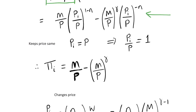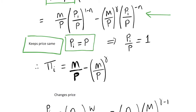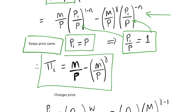Let's first look at profits when a firm keeps its price the same. Originally all firms were identical, setting their price given expectations of the price level and money supply, so pi equals p. If every firm keeps their price the same, pi over p equals 1. Substituting this 1 into the profit function, we get profits from not changing prices: simply m over p minus m over p to the power of gamma.